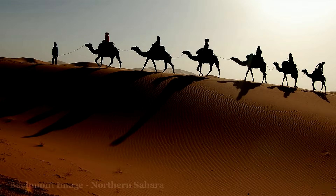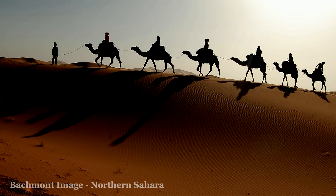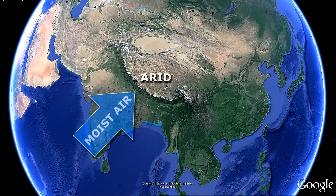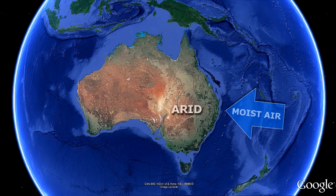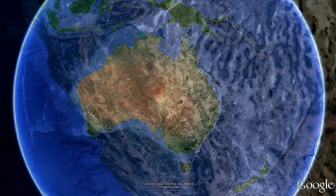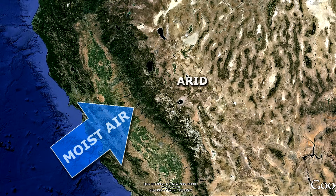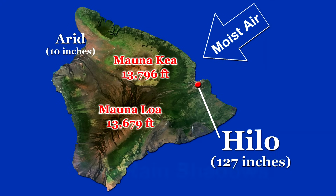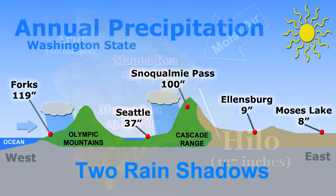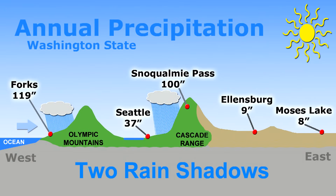Some of the driest places around the world exist because of the rain shadow effect. There's a rain shadow north of the Himalayas in Asia, west of the Great Dividing Range in Australia, east of the Sierra Nevada Mountain Range in California, and southwest of Mauna Kea on the Big Island of Hawaii. And here in the Pacific Northwest, we actually have two rain shadows.